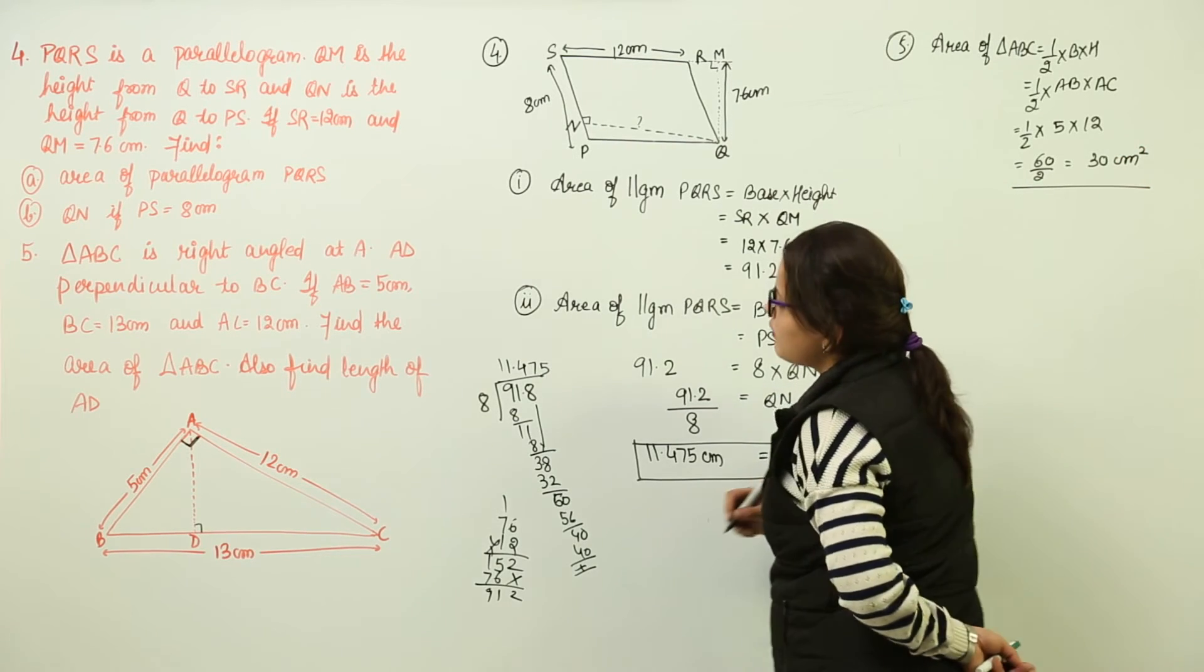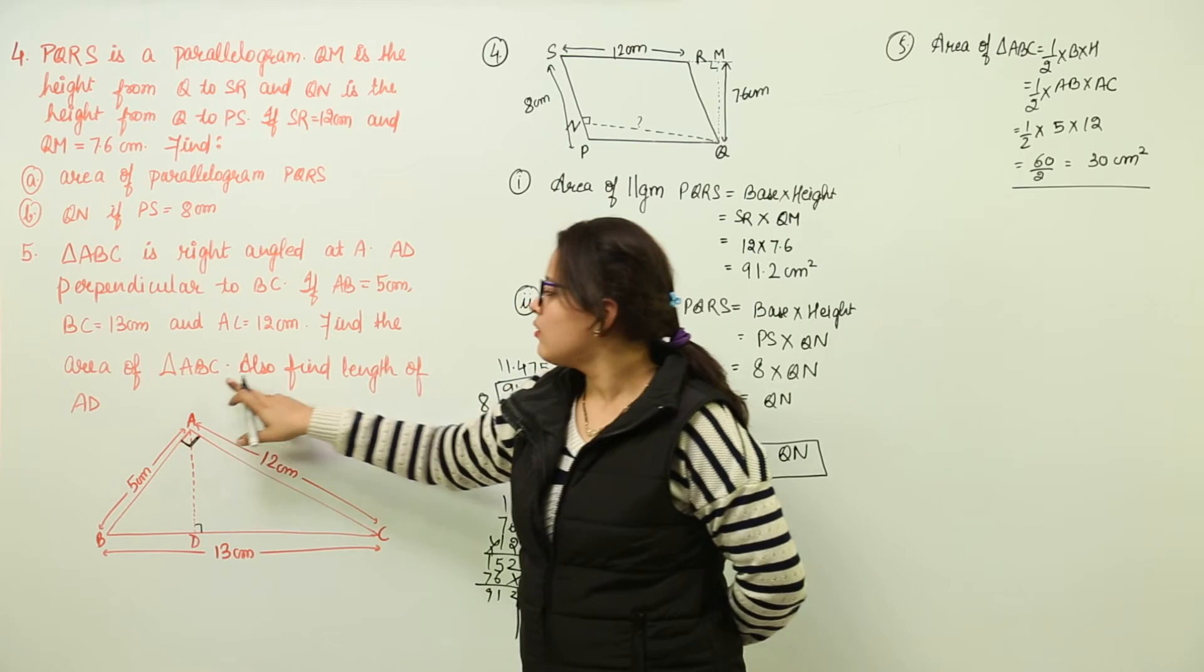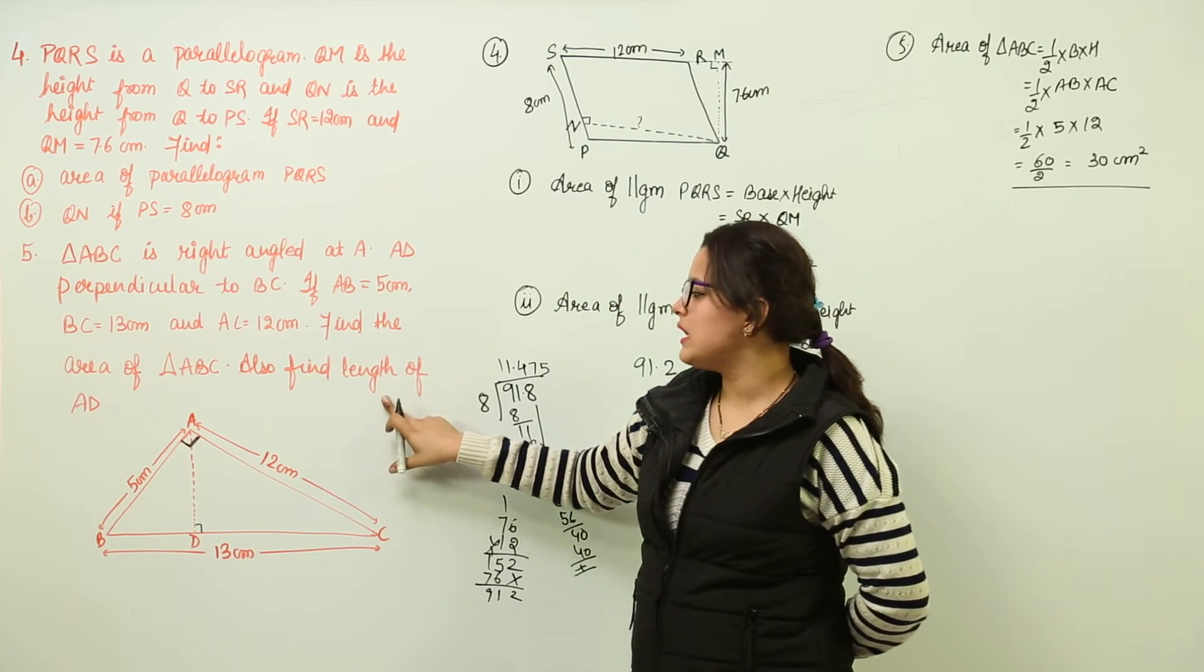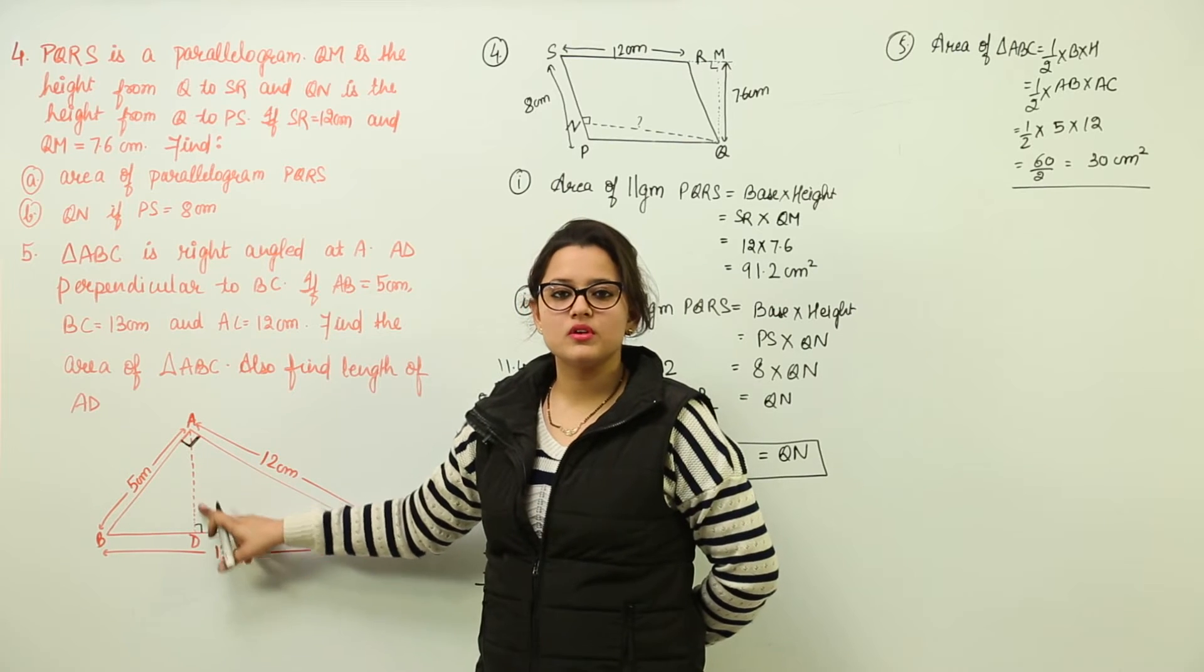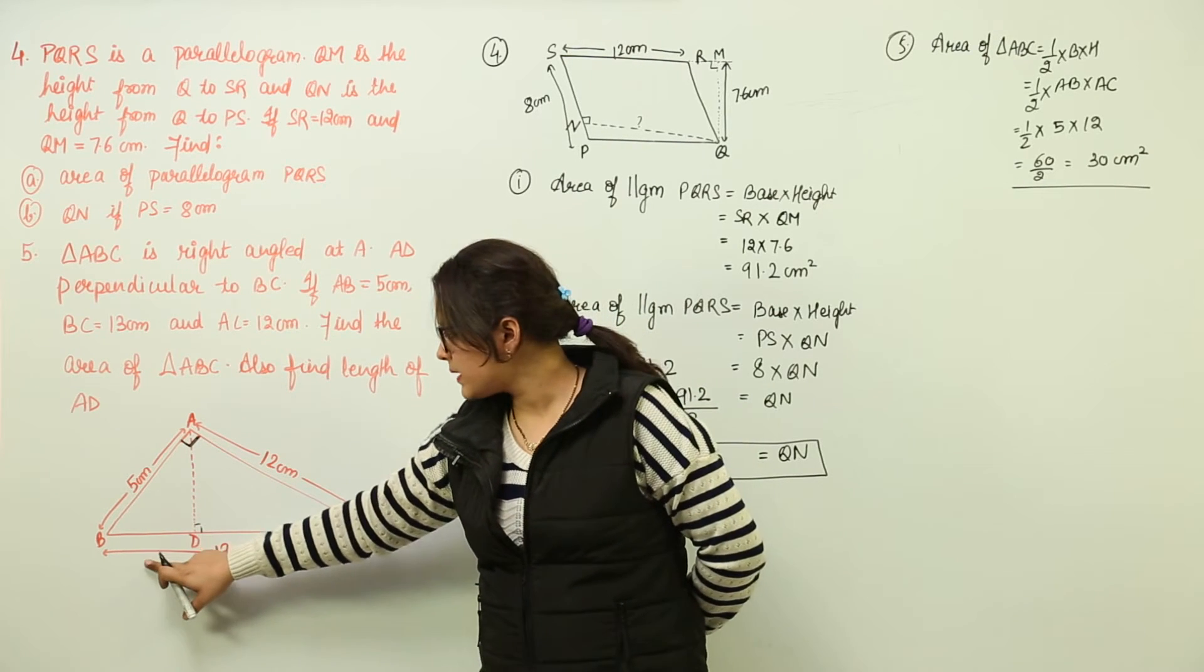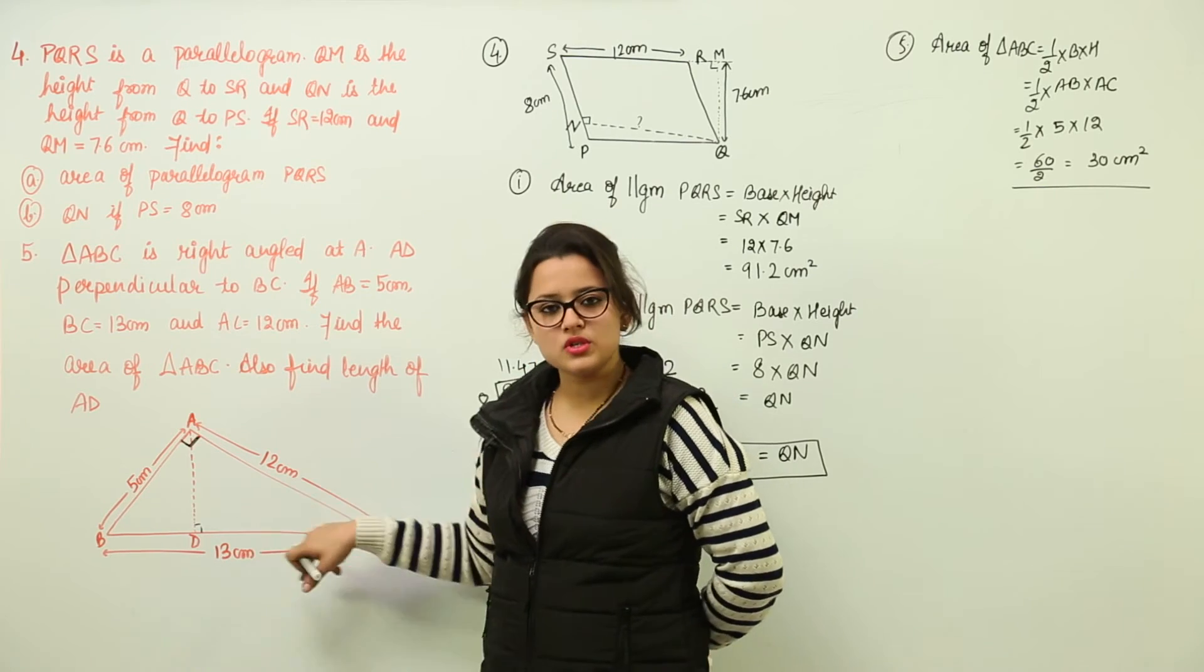Now this was the area to be found in the first step. Also we are going to find out the length of AD. Now what is the length of AD representing over here? It is representing the height for respective base BC of this triangle.